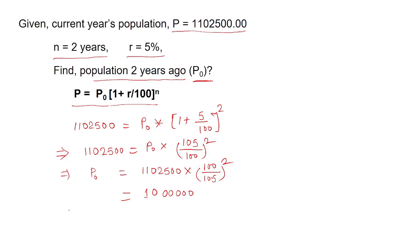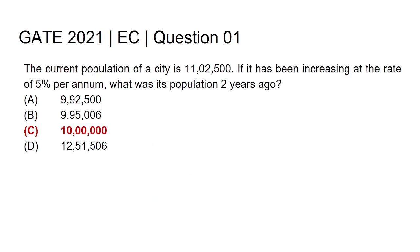So the population of the city two years back, that is P0, equals 1,00,00,000. Therefore, the answer to this question is option C, that is 1,00,00,000. Thank you.